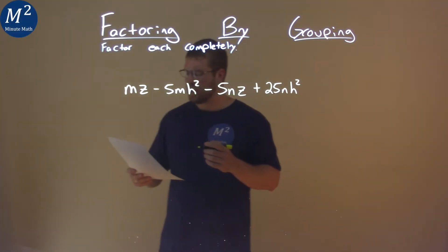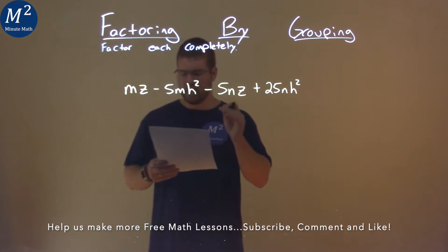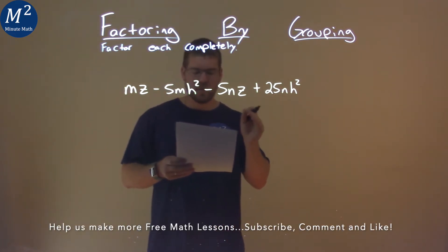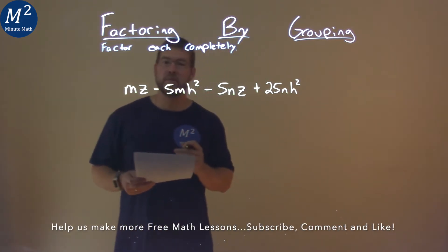We're given this problem right here: mz minus 5mh squared minus 5nz plus 25nh squared, and we need to factor this completely.